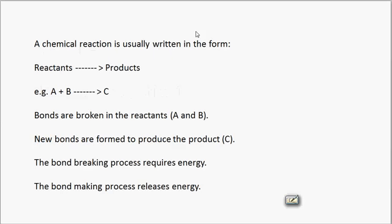In any chemical reaction we have reactants on the left hand side and products on the right hand side. For example, if we have A plus B reacting to produce C, then A and B represent the reactants and C represents the product.